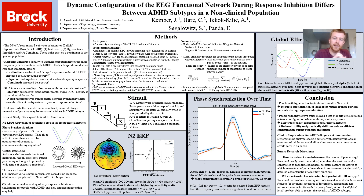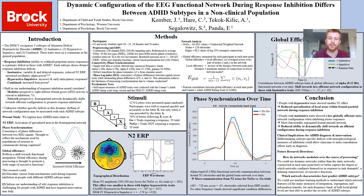With those N2 areas, we looked at how communication with the rest of the global network changes over time. Looking at five different frequency bands — delta, theta, alpha, beta, and gamma — the alpha communication showed significant differences from around 400 to 700 milliseconds. This was greater communication from the N2 areas with the rest of the global network for the no-go condition compared to the go condition.